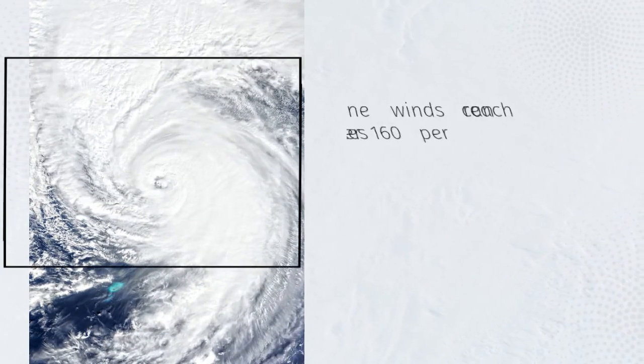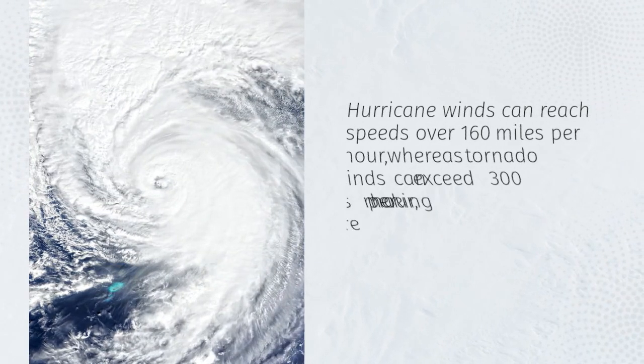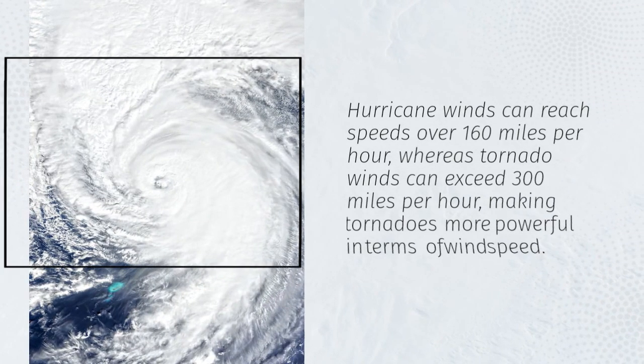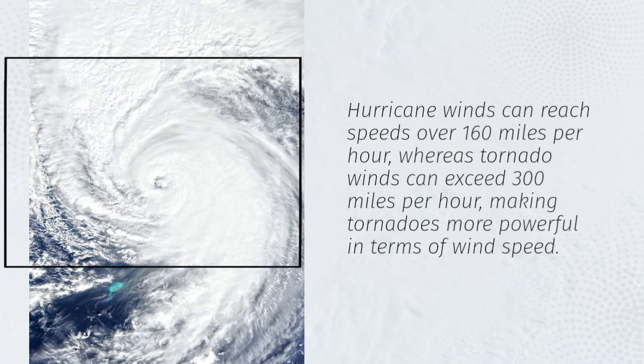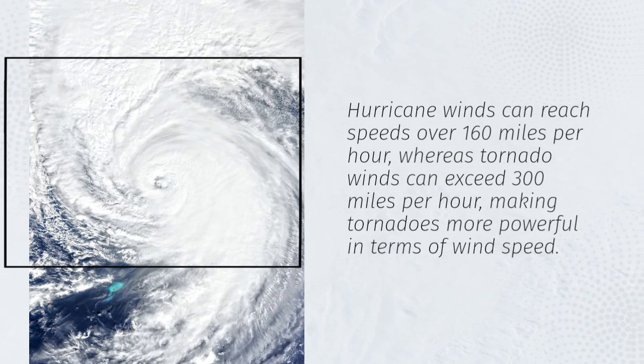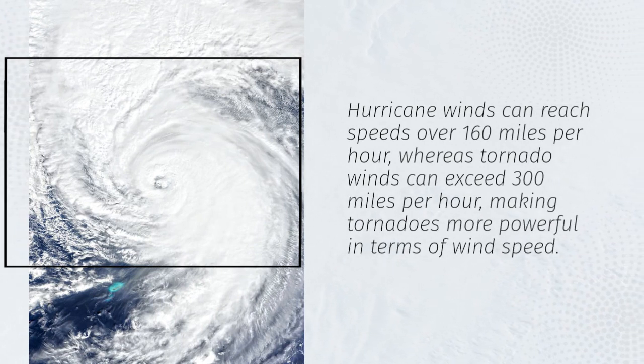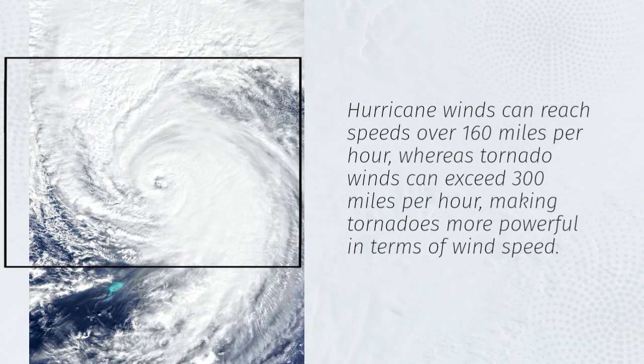Hurricane winds can reach speeds over 160 miles per hour, whereas tornado winds can exceed 300 miles per hour, making tornadoes more powerful in terms of wind speed.